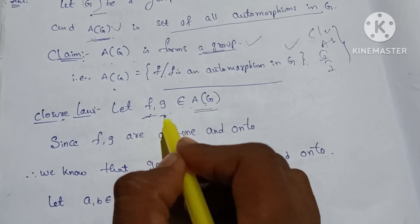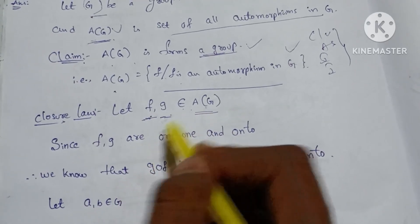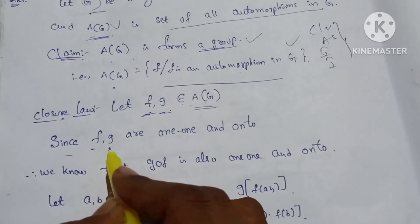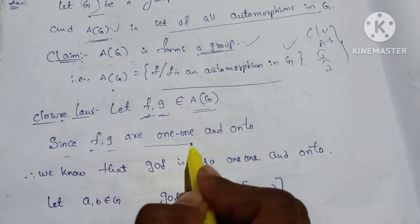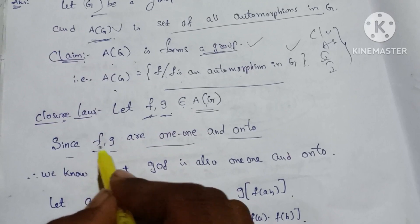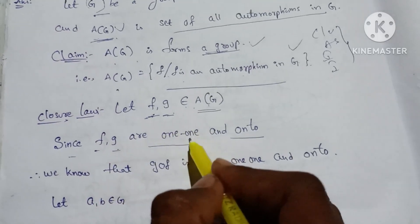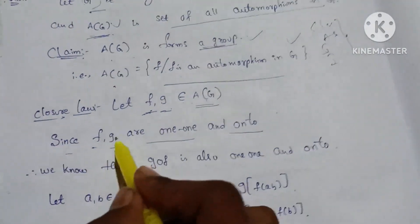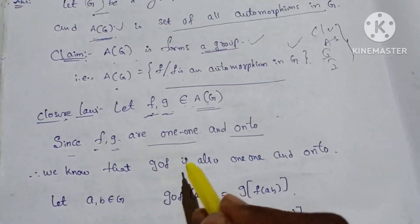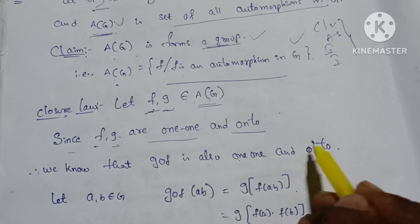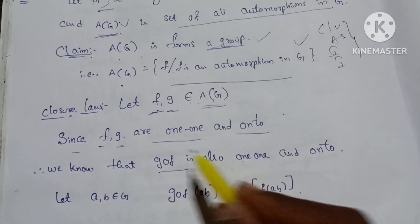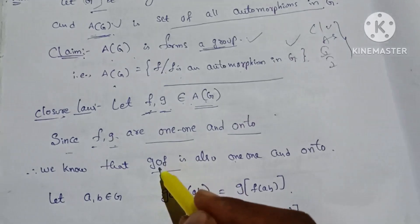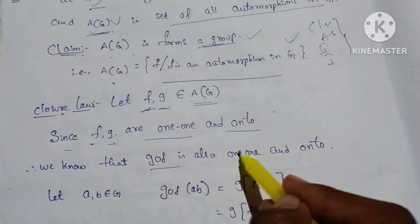Since F and G are one-one and onto, G∘F is also one-one and onto. In this interval, there is a condition: F and G are one-one and onto, therefore G circle F is one-one and onto.